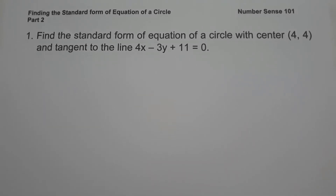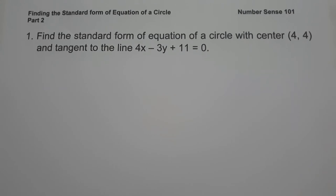For today's video, we are going to continue our discussion on how to find the standard form of equation of a circle using the given condition. Find the standard form of equation of a circle with the center (4,4) and tangent to the line 4x minus 3y plus 11 equals 0.